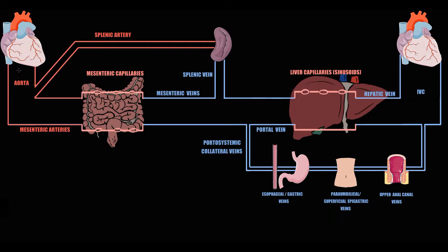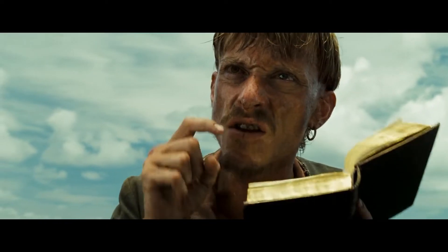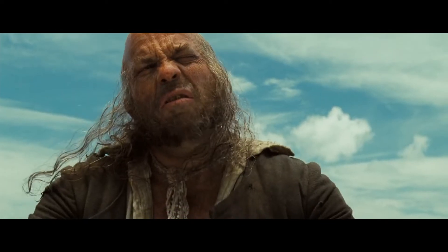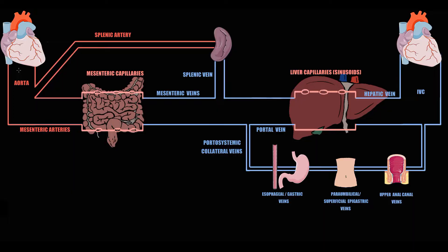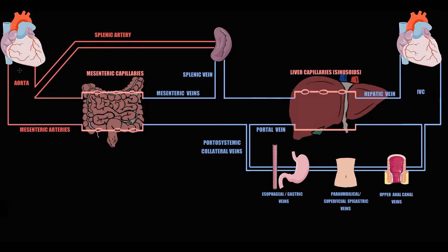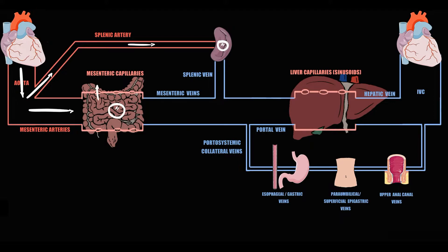First of all, to understand how portal vein thrombosis develops, we have to recall splanchnic circulation. Initially the left ventricle pushes blood into the aorta, and from the aorta blood goes into the splenic artery that supplies blood to the spleen, and mesenteric arteries that supply blood to the intestine, where in mesenteric capillaries fluid exchange occurs.